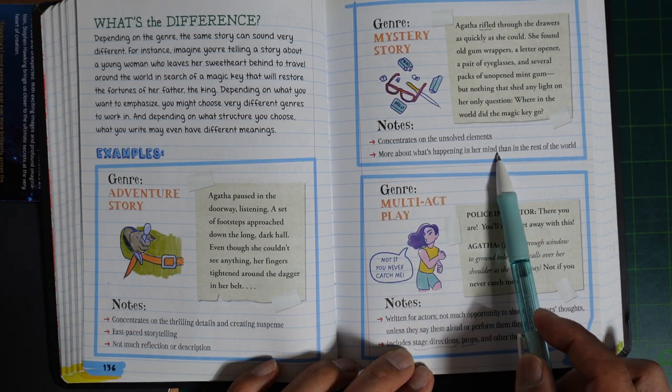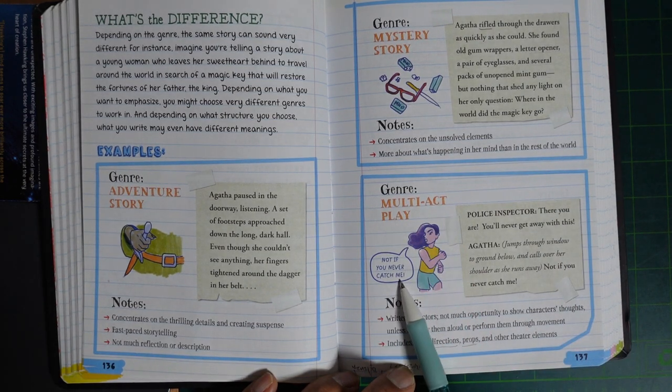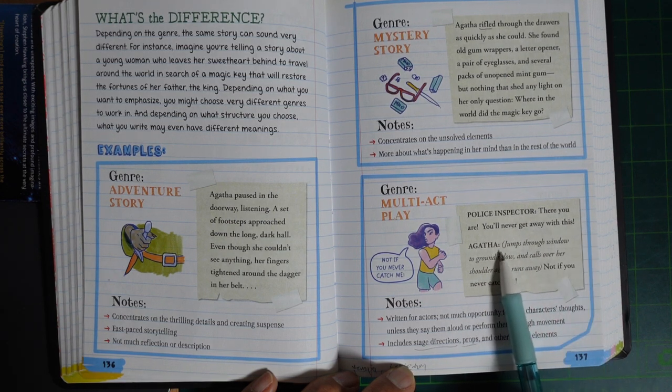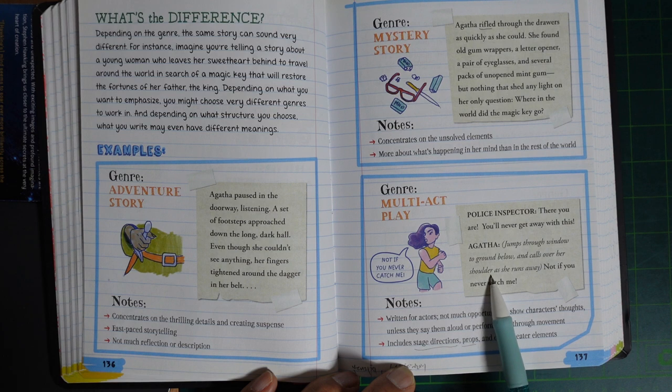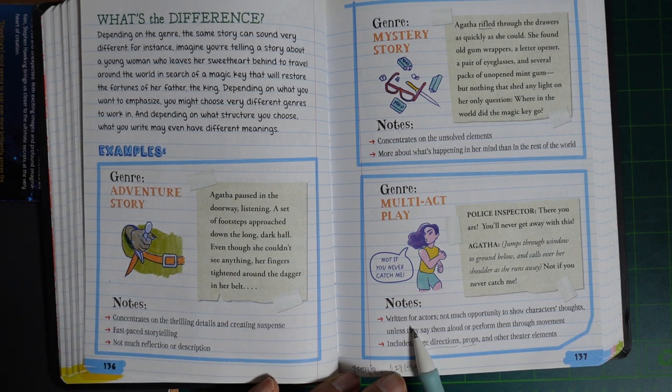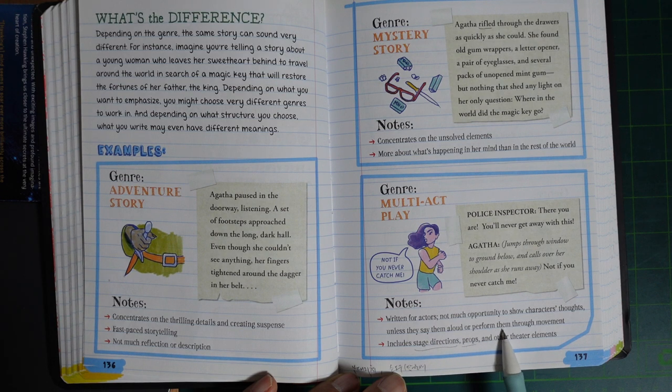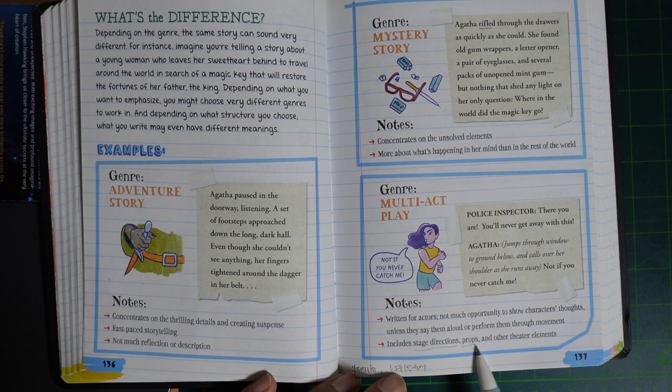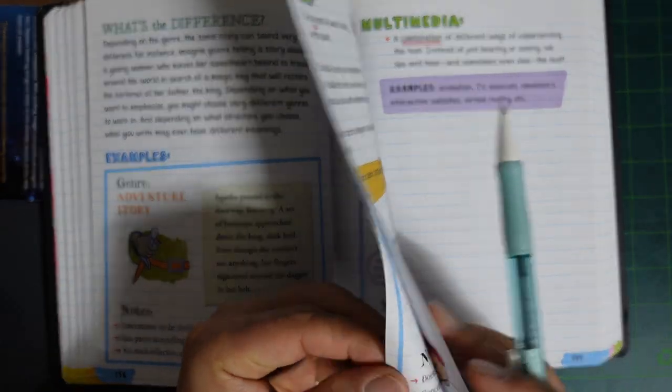Genre: Multi-act Play. Police Inspector: You'll never get away with this! Agasa jumps through the window to the ground floor below and calls over her shoulder as she runs away: Not if you never catch me! Notes: Written for actors. Not much opportunity to show characters' thoughts unless they say them aloud and perform them through movement. Includes stage directions, props, and other theater elements.